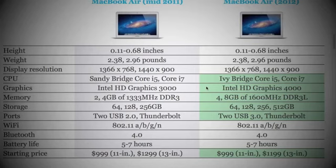The MacBook Air is 0.68 inches at its thickest point with its wedge-shaped design, compared to 0.72 all across for the MacBook Pro with Retina — so not a huge physical difference between the two at their thickest.